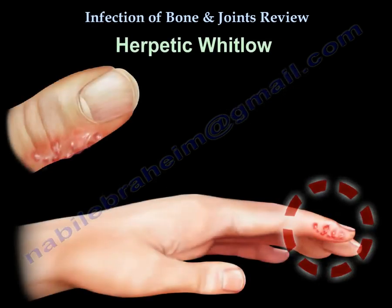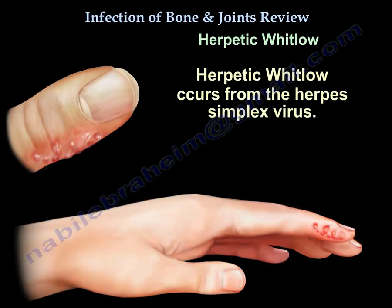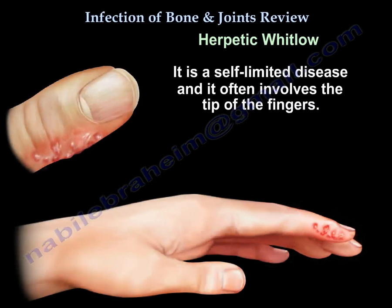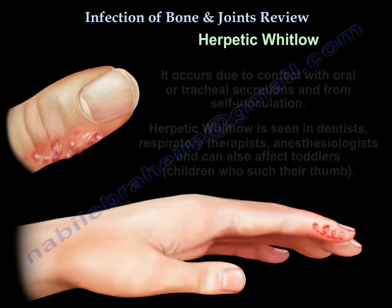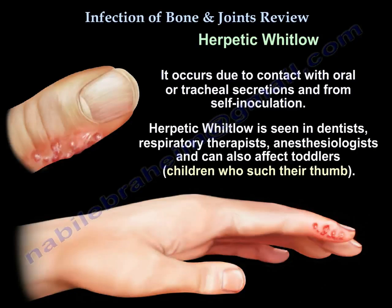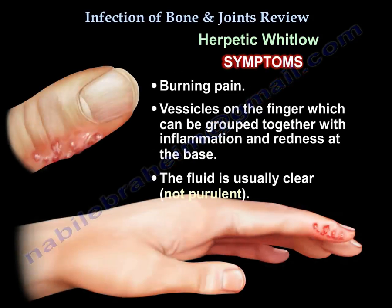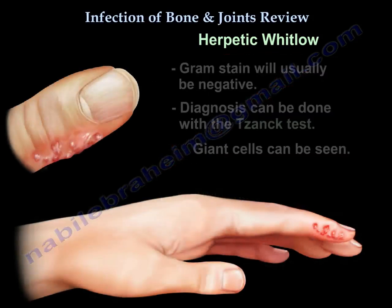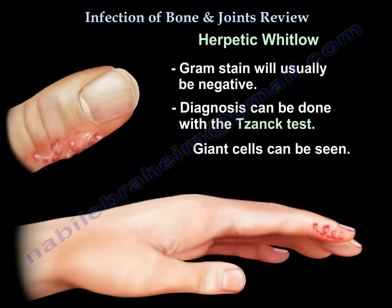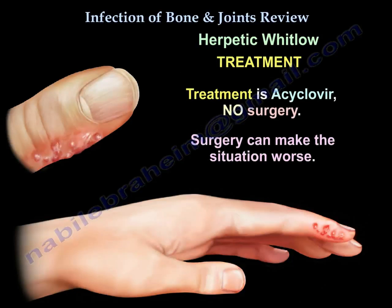Herpetic whitlow occurs from herpes simplex virus. It is a self-limited disease that often involves the tips of the fingers. It occurs from contact with oral and tracheal secretions and from self-inoculation. It is seen in dentists, respiratory therapists, and anesthesiologists, and can also affect toddlers who suck their thumb. The patient will have burning pain and vesicles on the finger. The vesicles can be grouped with inflammation and redness at the base. The fluid is usually clear and not purulent. Gram stain is usually negative. Diagnosis can be made by Tzanck test — giant cells can be seen. Treatment is acyclovir and no surgery, as surgery can make the situation worse.